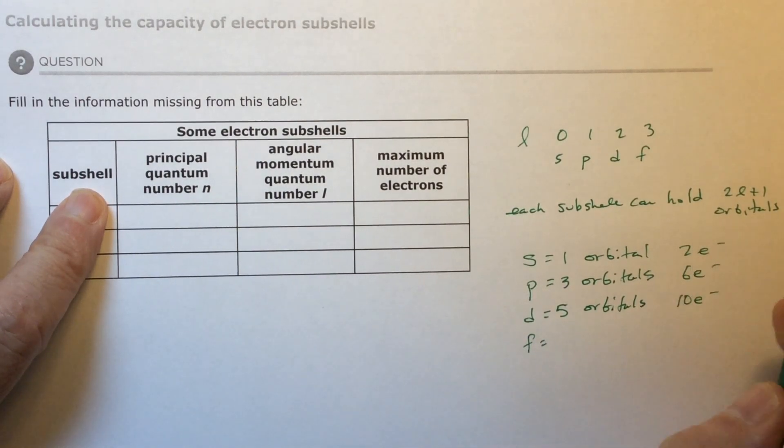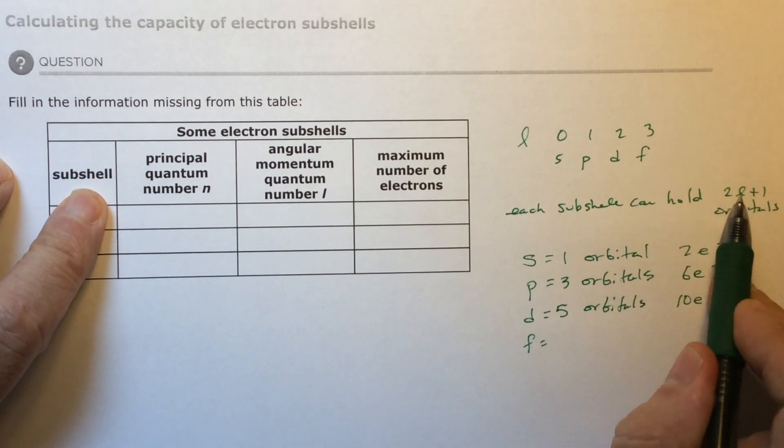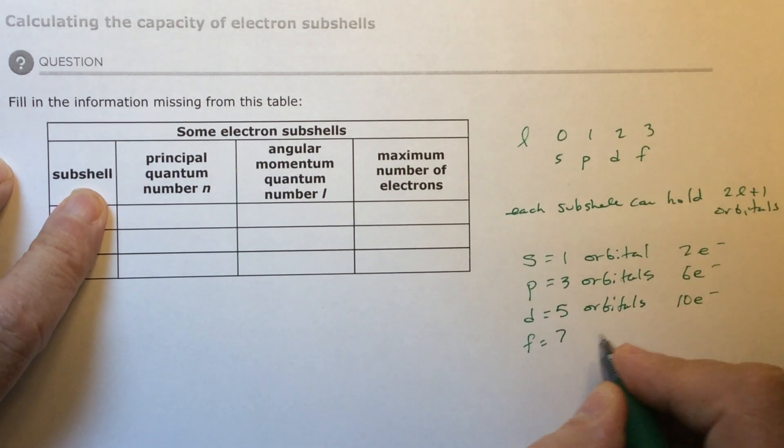And F is three. Three times two is six plus one is seven orbitals. And that's going to be 14 electrons.